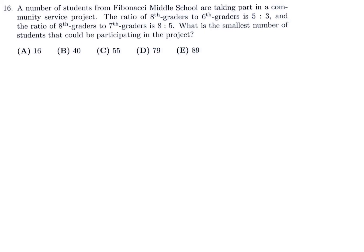A number of students from Fibonacci Middle School are taking part in a community service project. The ratio of 8th graders to 6th graders is 5 to 3. And the ratio of 8th graders to 7th graders is 8 to 5. What is the smallest number of students that could be participating in this project? Well, 8th graders to 6th graders, they have this ratio of 5 to 3. And then we have 8th graders to 7th graders is the ratio 8 to 5. So I have 8th graders, 7th graders, and 6th graders. Now I'll just give them A, B, and C. It just, I think, makes it less confusing. So these equations basically become A over C is 5 over 3. And A over B is 8 over 5.